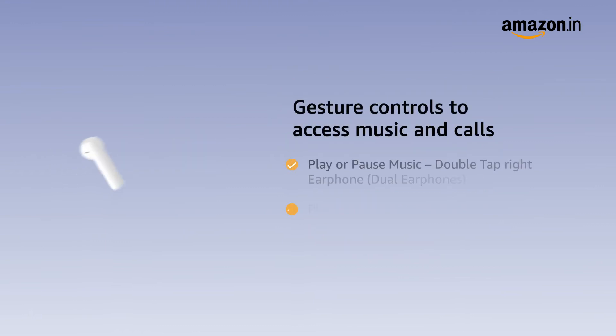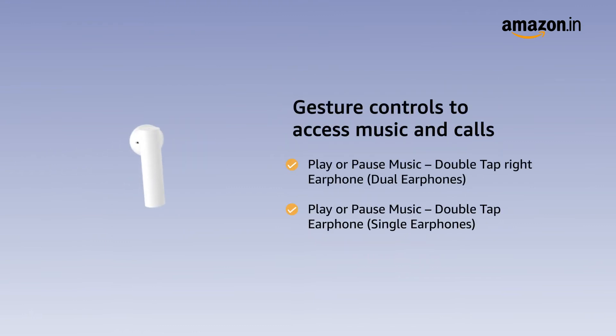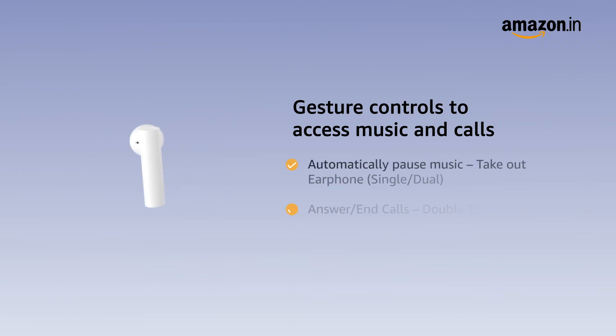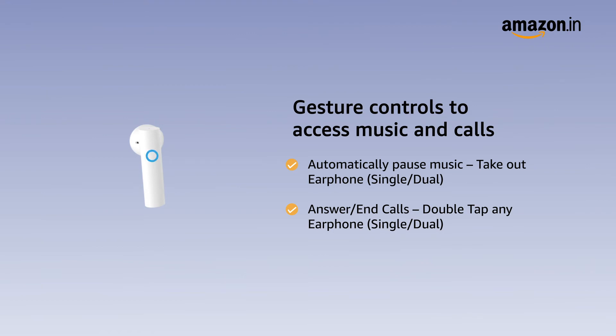Gesture controls to access music and calls: Double tap the right earphone to play or pause music. Taking out an earphone will automatically pause the music. Double tap the earphone to play or pause music for one ear. Double tap either one of the earphones to answer or end calls.